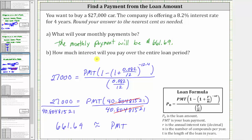Now for part B, how much interest will you pay over the entire loan? To determine the amount of interest, we first determine the total amount of the payments you make, which would be the monthly payment of $661.69 times the number of months over the four-year period, and then we subtract the amount of the loan, which is $27,000.